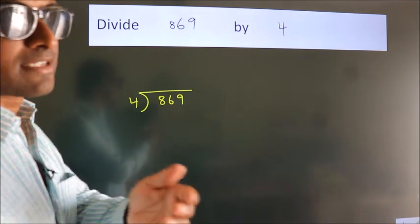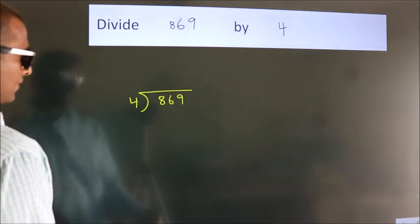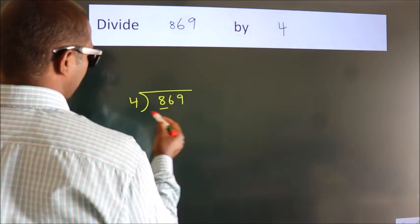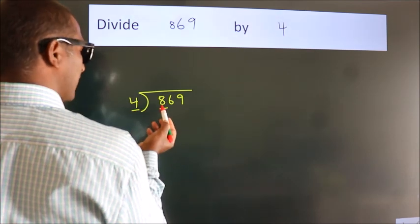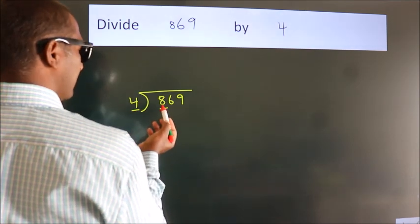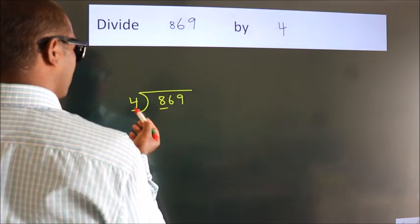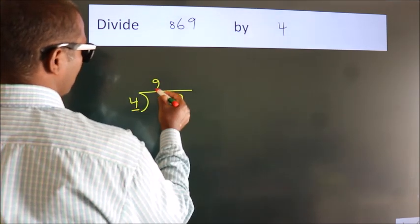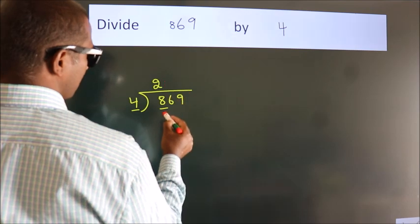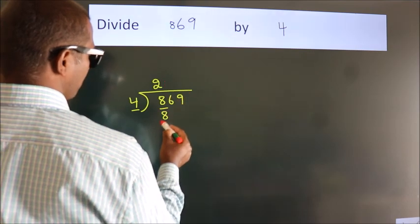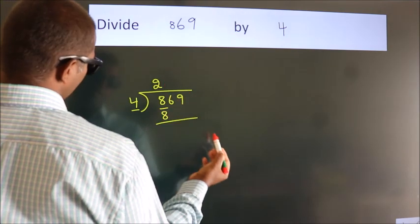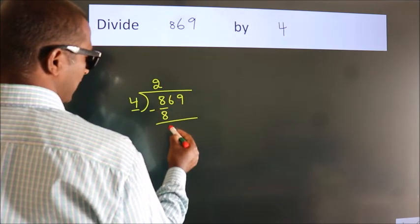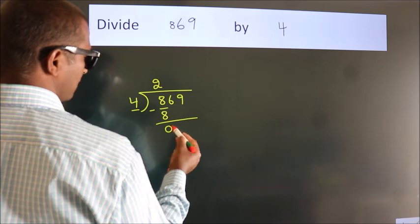Here we have 8, and here 4. When do we get 8? In the 4 times table, 4 twos are 8. Now we should subtract, and we get 0.